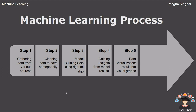Now let's understand the workflow of machine learning. The very first step is to collect the data from various resources. The second step is to clean the data. The third step is to choose the correct machine learning algorithm in order to fit your data. The fourth step is to gain insights from the model results. The fifth step is to visualize the data and take a correct decision.